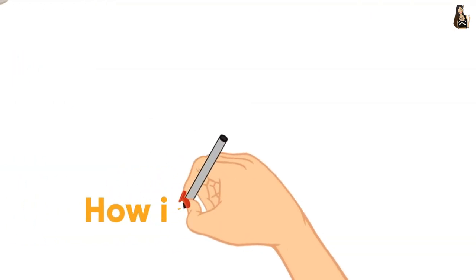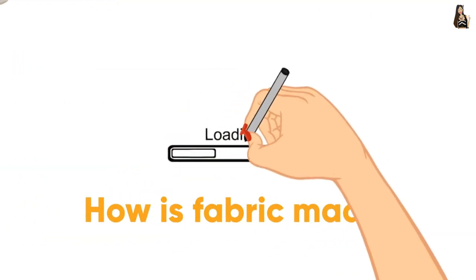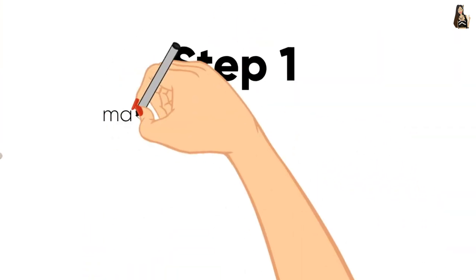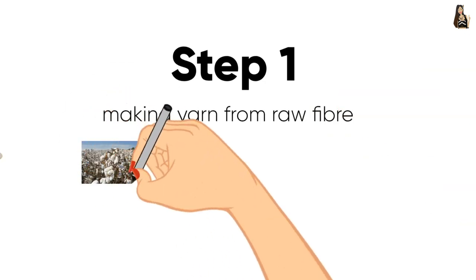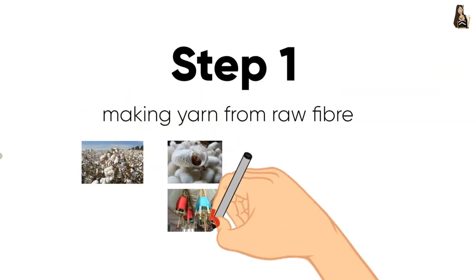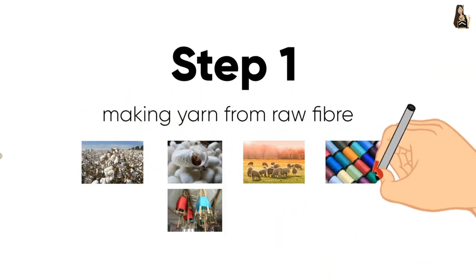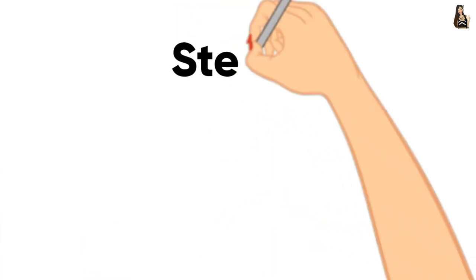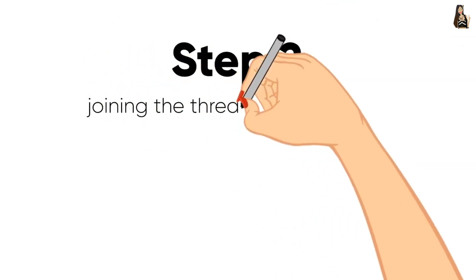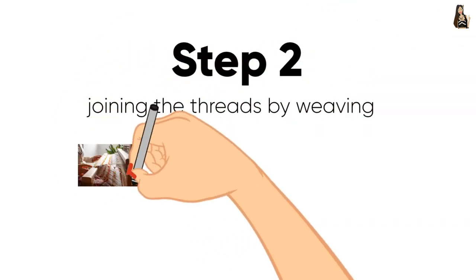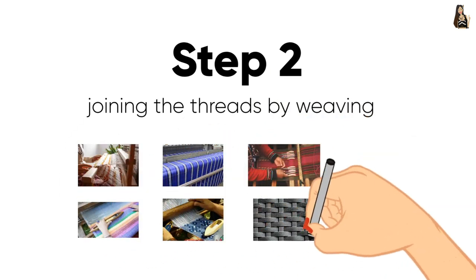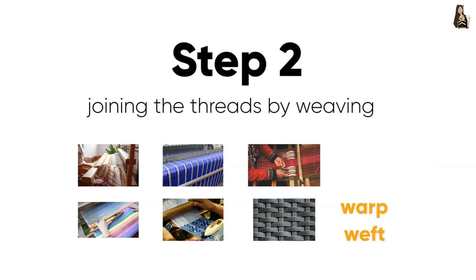Once you've chosen the fabric type, let's move on to the detail — namely, how is the fabric made? The fabric making process can be split into three steps. First, making yarn from raw fiber, for example cotton, silk, wool, or synthetics. I've provided some interesting links in the description. The second step is joining the threads by weaving. Here we can distinguish two components or sets of yarn: the warp and the weft. You will also find them in Houdini, so it's important.